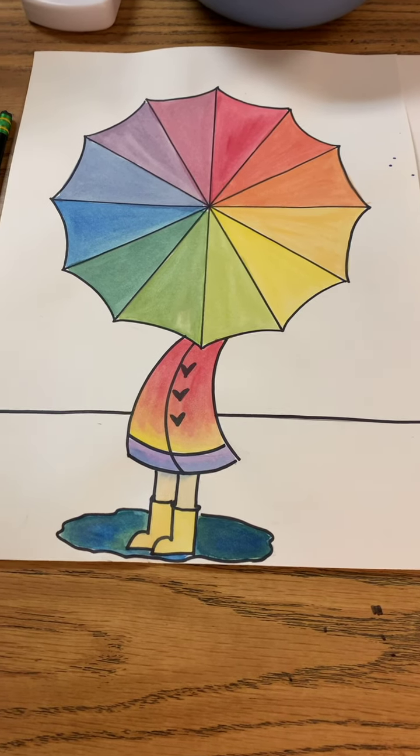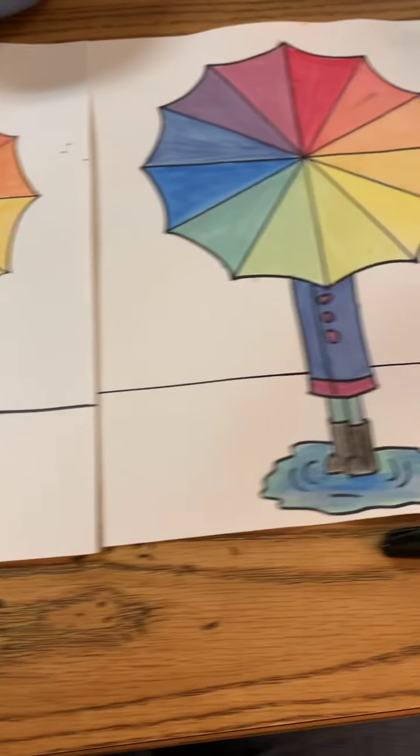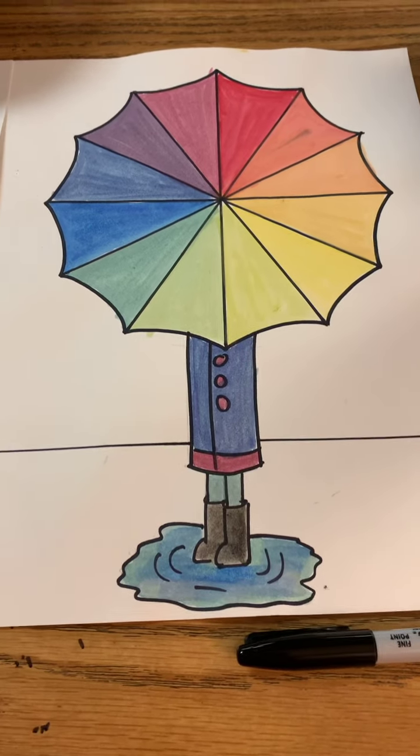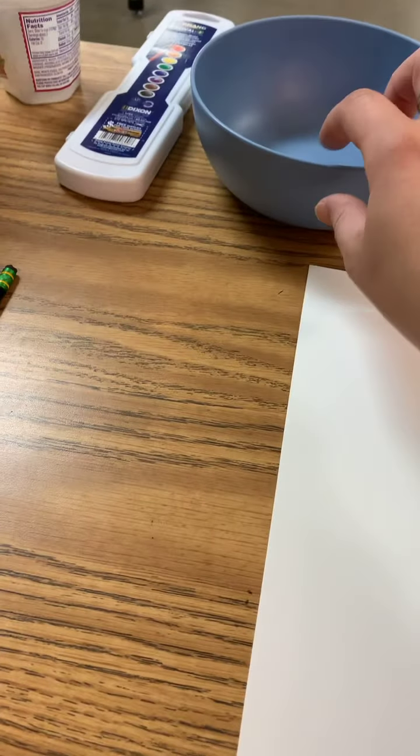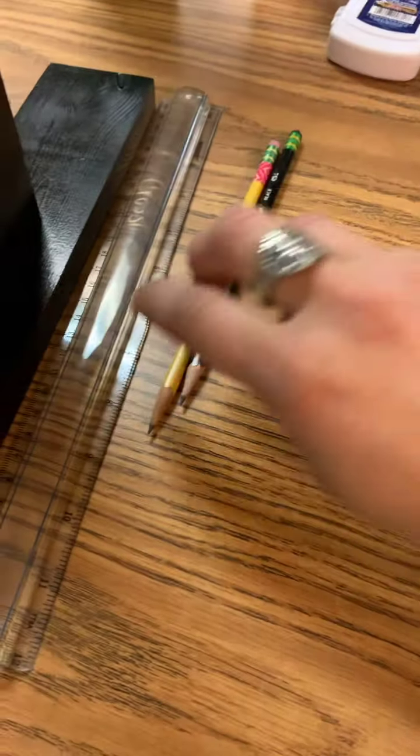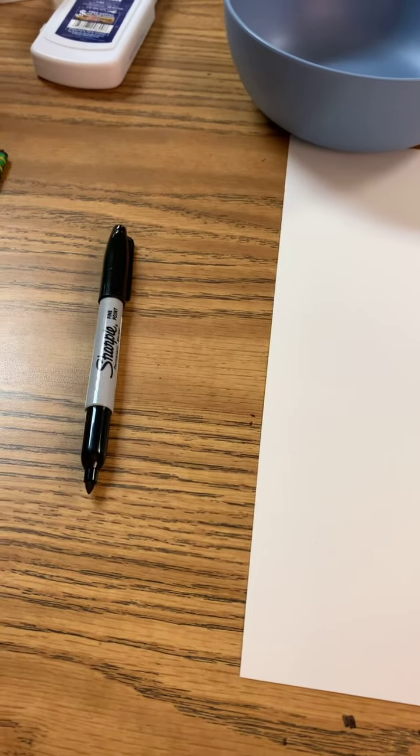So this is what our project is going to be. You can either do the girl version or you can do the boy version. The supplies you're going to need for this is a 9x12 thicker piece of paper, some type of round object, I'm going to use a bowl, and then pencils and a ruler and of course our sharpie and eraser.